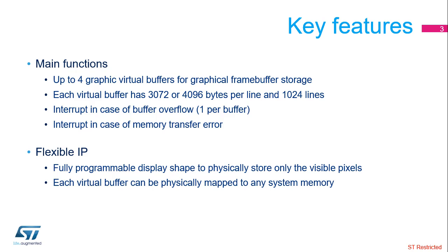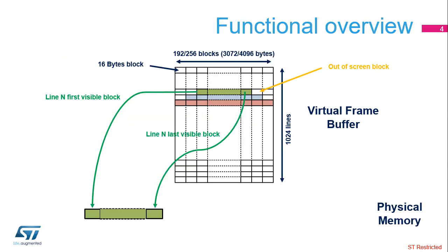Thanks to this very flexible architecture, only the visible pixels are effectively stored, and each virtual buffer can be physically mapped to any memory of the system. Each virtual buffer is seen as a continuous memory space of 3,072 or 4,096 bytes per 1,024 lines.